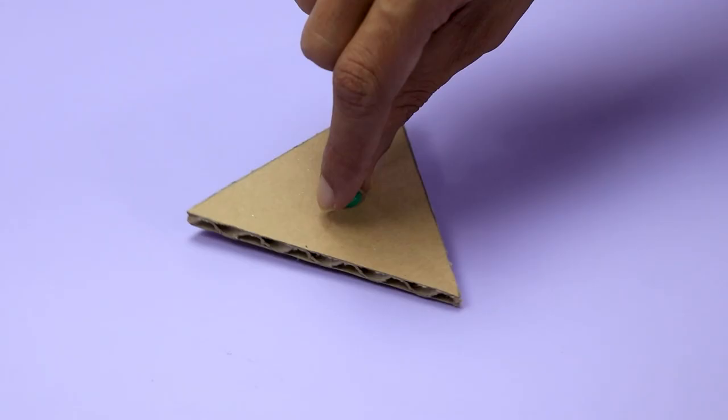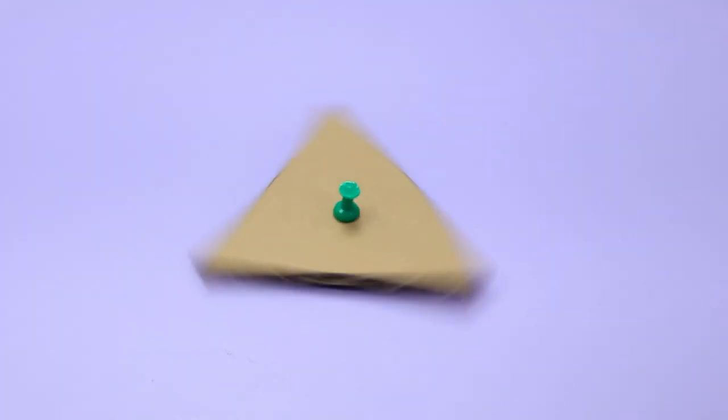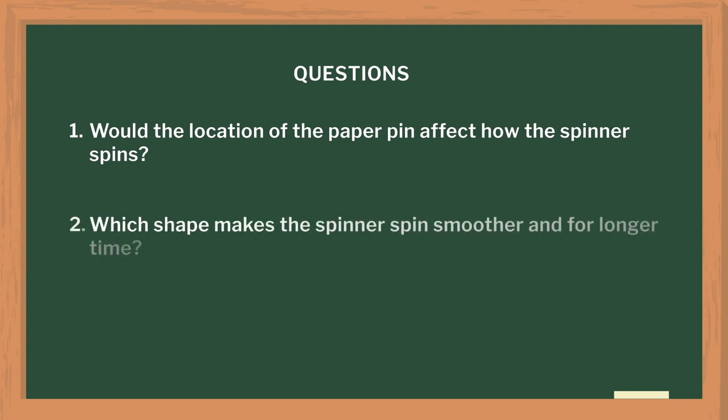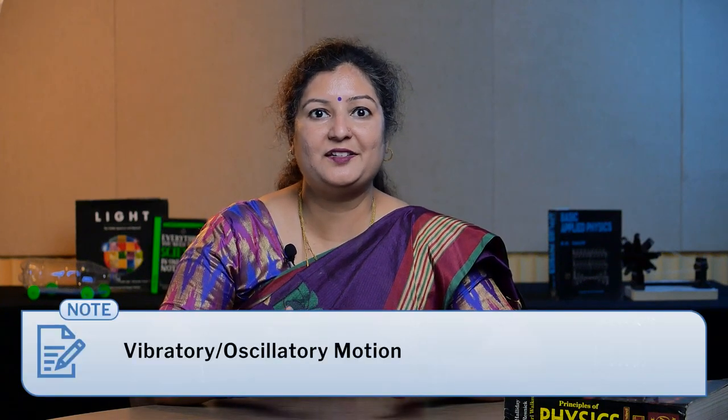You can make spinners of different shapes. I asked students: would the location of the paper pin affect how the spinner spins? Which shape makes the spinner spin smoothly and for a longer time? Students were very curious to try this with thin paper as well as thick foam sheet. I encouraged them to think of more examples — they came up with the motion of a fan, motion of wheels of a car, and motion of wheels of a sewing machine. Then I asked: what is the motion of the needle of the sewing machine or the strings of a guitar?